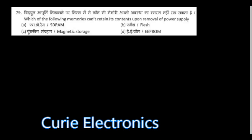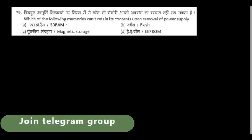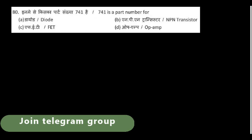Which memory loses its data upon removal of power supply? Static RAM or Dynamic RAM — this is a volatile memory. Flash, EPROM, and ROM are all non-volatile memories. Also, 741 is the part number of the op-amp — all of you should know that.